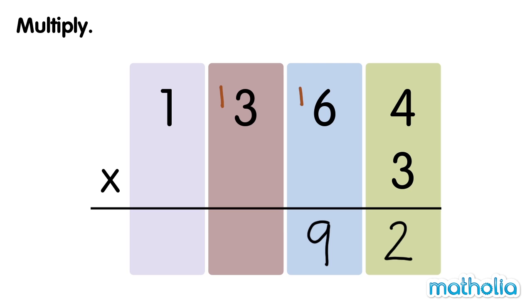Multiply the 100s. 3 times 3 hundreds equals 9 hundreds. 9 hundreds plus 1 hundred equals 10 hundreds. Regroup 10 hundreds into 1 thousand and 0 hundreds.